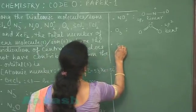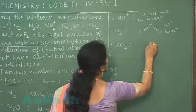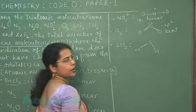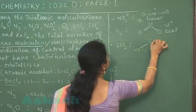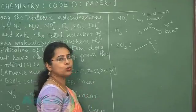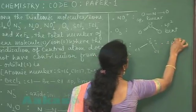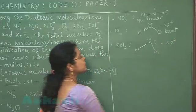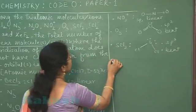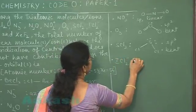The next one is SCl2. The central atom sulfur is bonded to two chlorine atoms through single bonds, giving two bond pairs and two lone pairs. So the central atom is sp3 hybridized, the geometry is tetrahedral, and the molecular shape is bent. The next one is ICl2 negative.